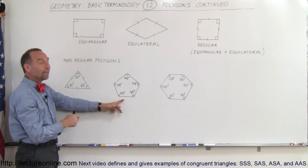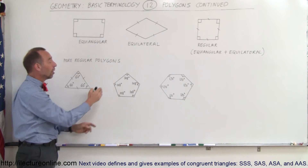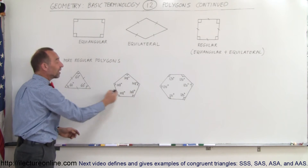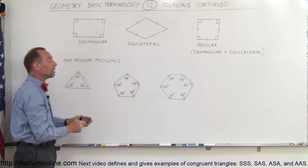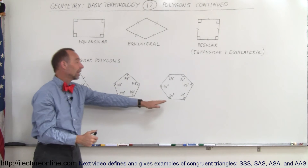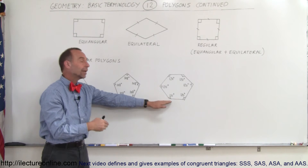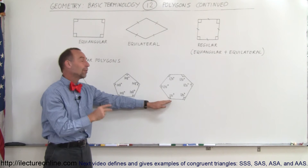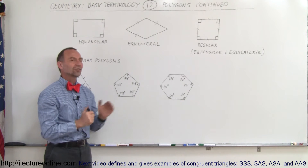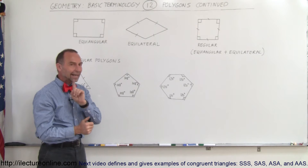Here we have what we call a pentagon — all five sides are the same, all five angles are the same. Here we have a hexagon — again, all six sides are the same, all six angles are the same.